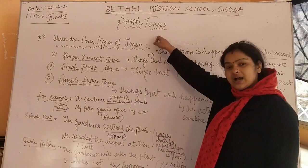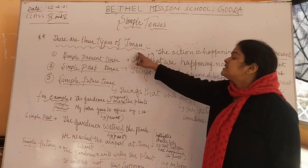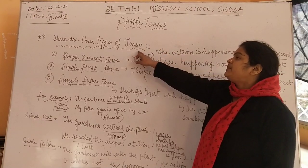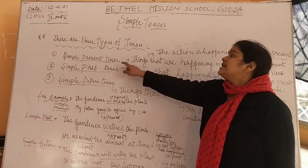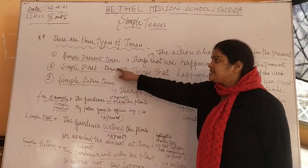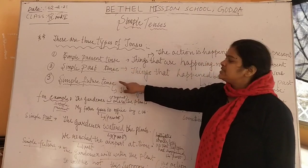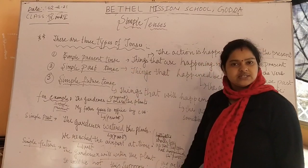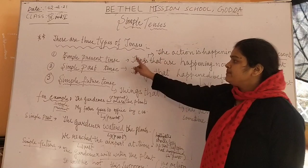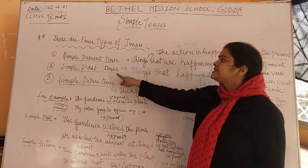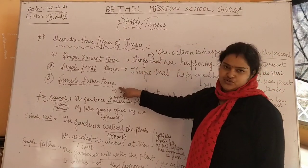Tense means 'car' — it is the time period. There are 3 types of tenses: Simple Present Tense, Simple Past Tense, and Simple Future Tense.